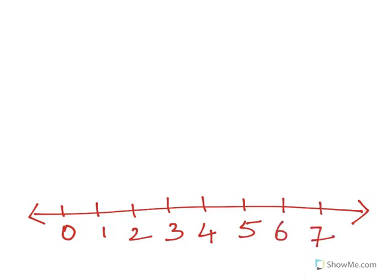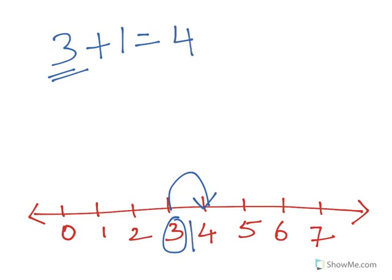To understand the logic behind it, we need to draw a number line starting at number 0, then 1, 2, 3, 4, 5, 6, 7, and so on. We can take one example like 3+1. Here we have to start at number 3 and count one more number, so we land on number 4.